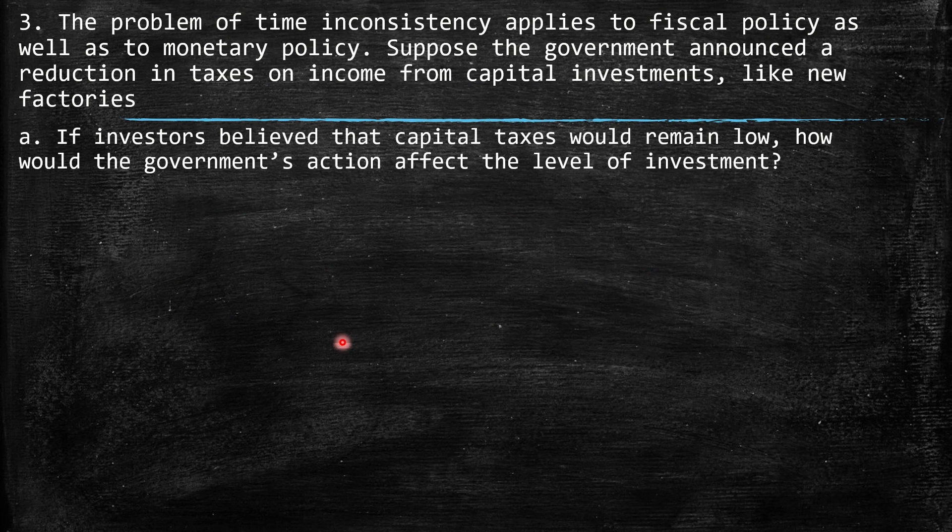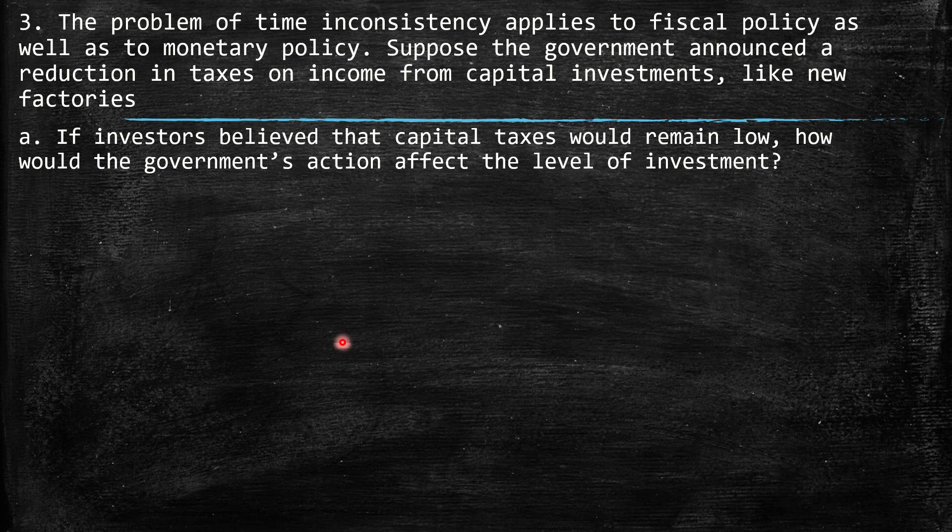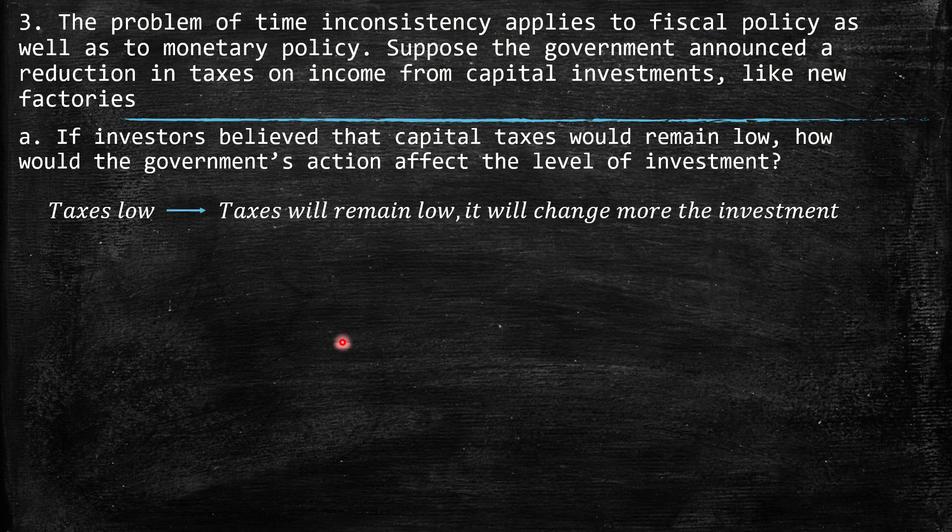Third, the problem of time inconsistency applies to fiscal policy as well as to monetary policy. Suppose the government announced a reduction in taxes on income from capital investments, like new factories. If investors believed that capital taxes would remain low, how would the government's actions affect the level of investment? Well, when these taxes are low, and people believe that it's going to remain low, naturally it will change the investment. Because investors will have incentives to make investment due to the tax reduction being over an important period of time. So, definitely this should be an incentive for investors.